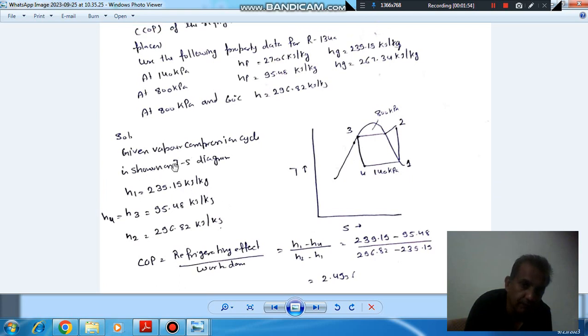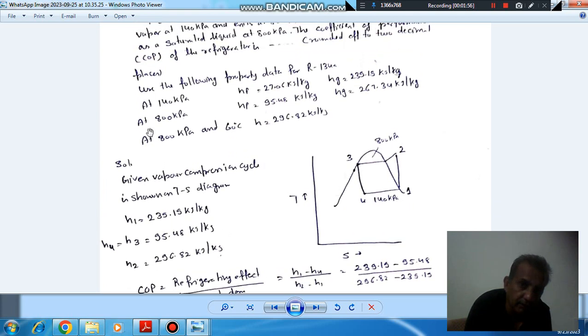Now we can find the enthalpy values from the given data. At 140 kPa, the saturated vapor has enthalpy of 239.19 kJ/kg, so h1 = 239.19 kJ/kg.